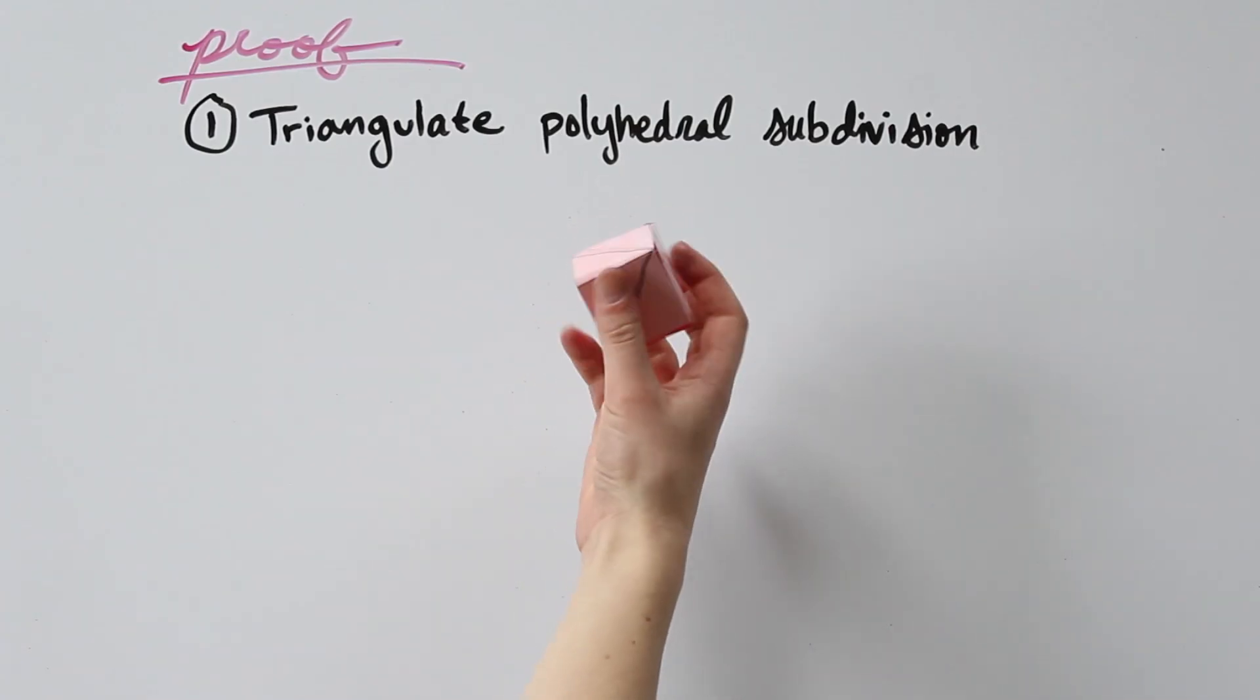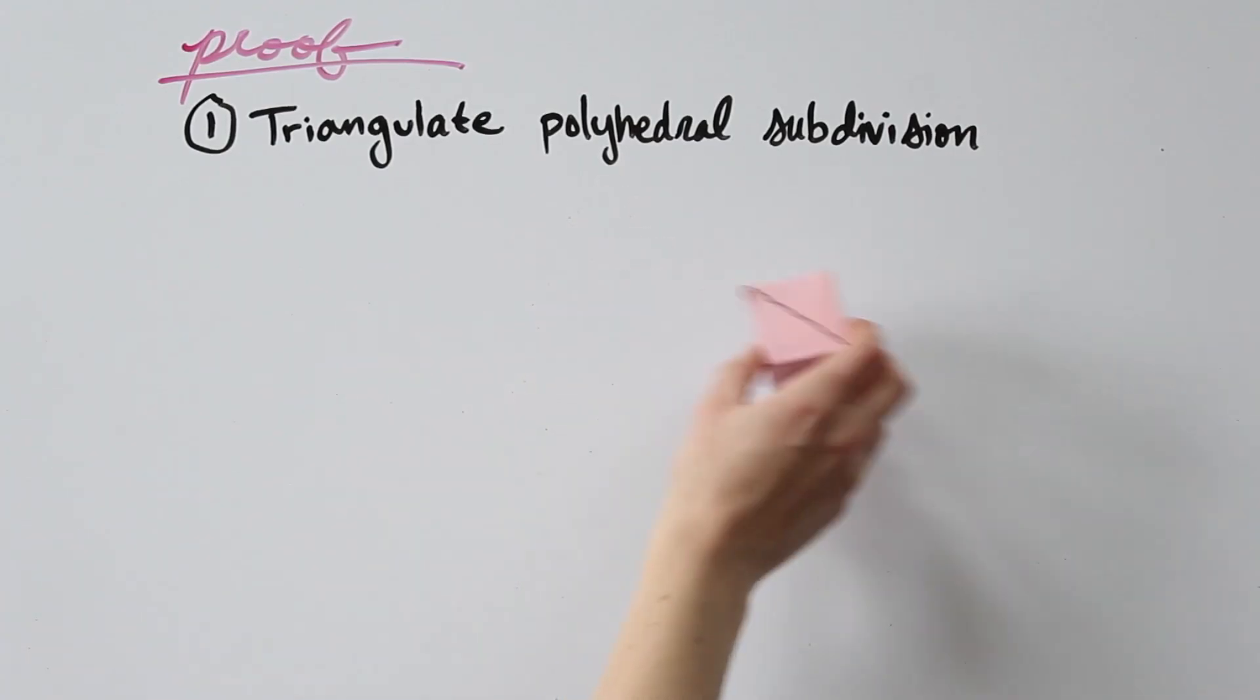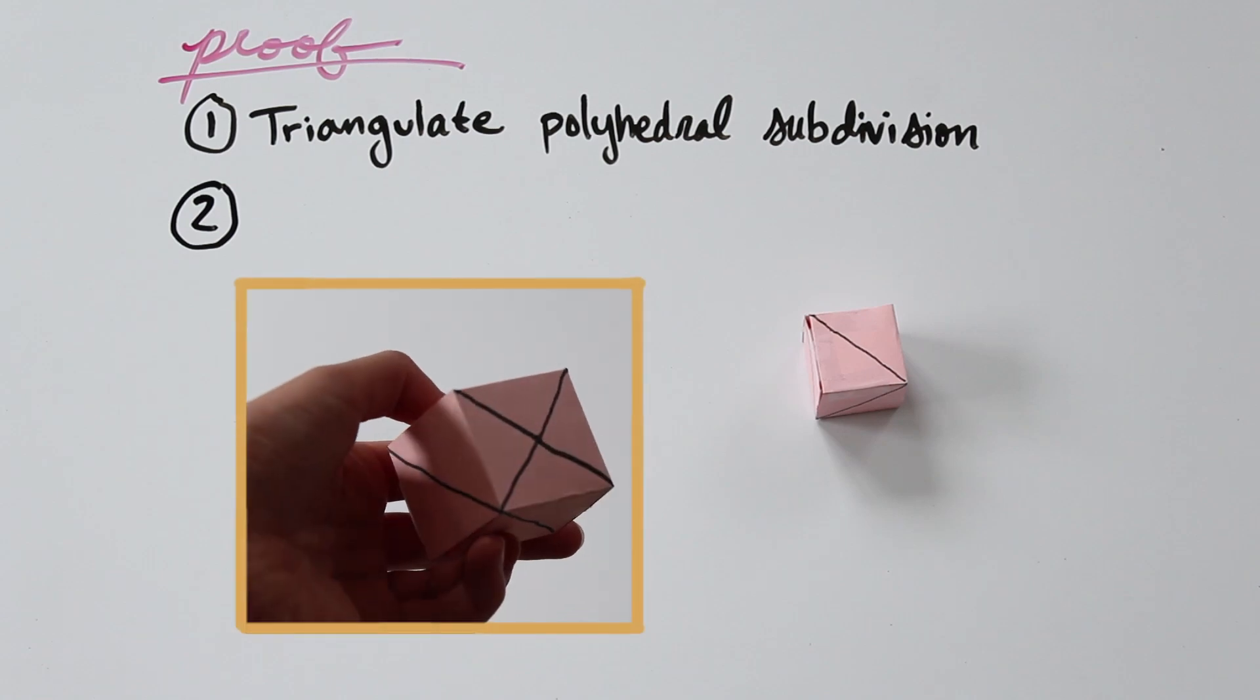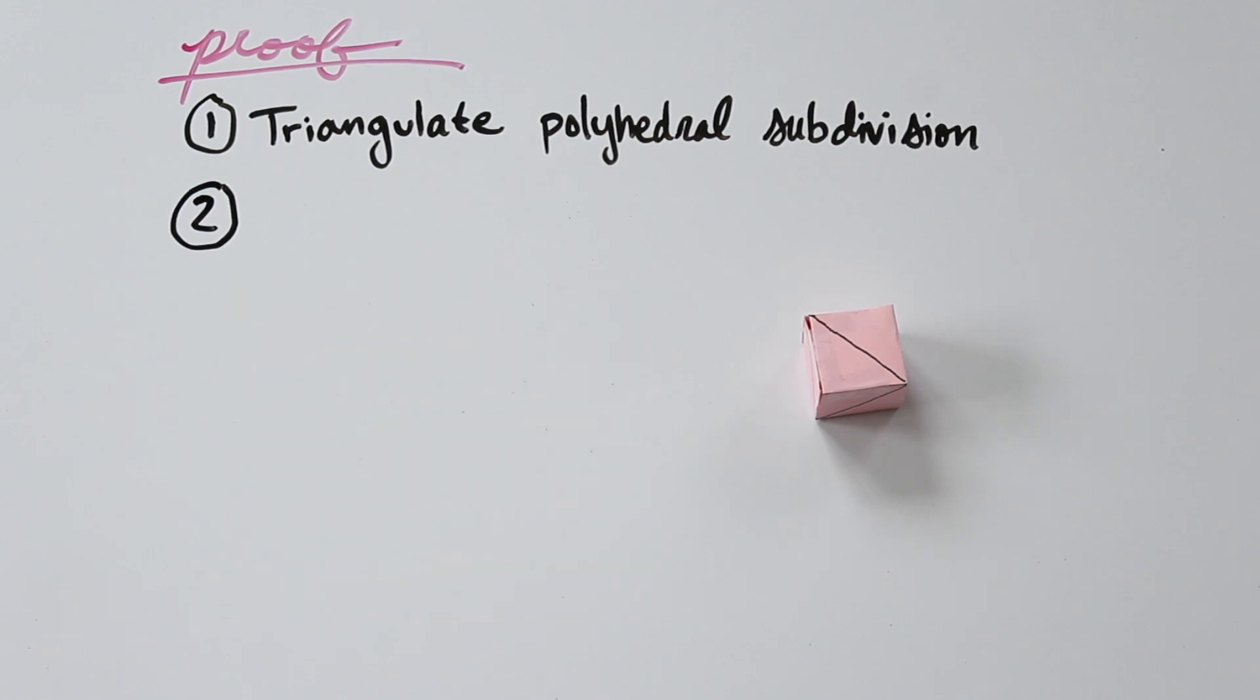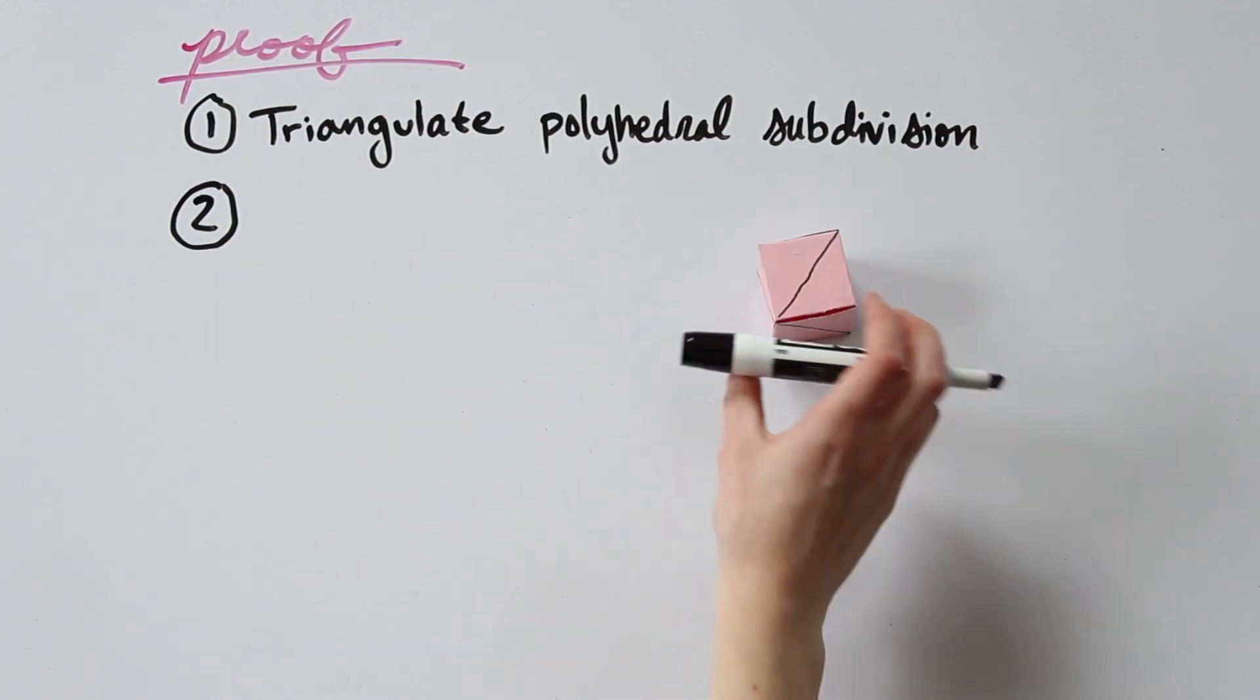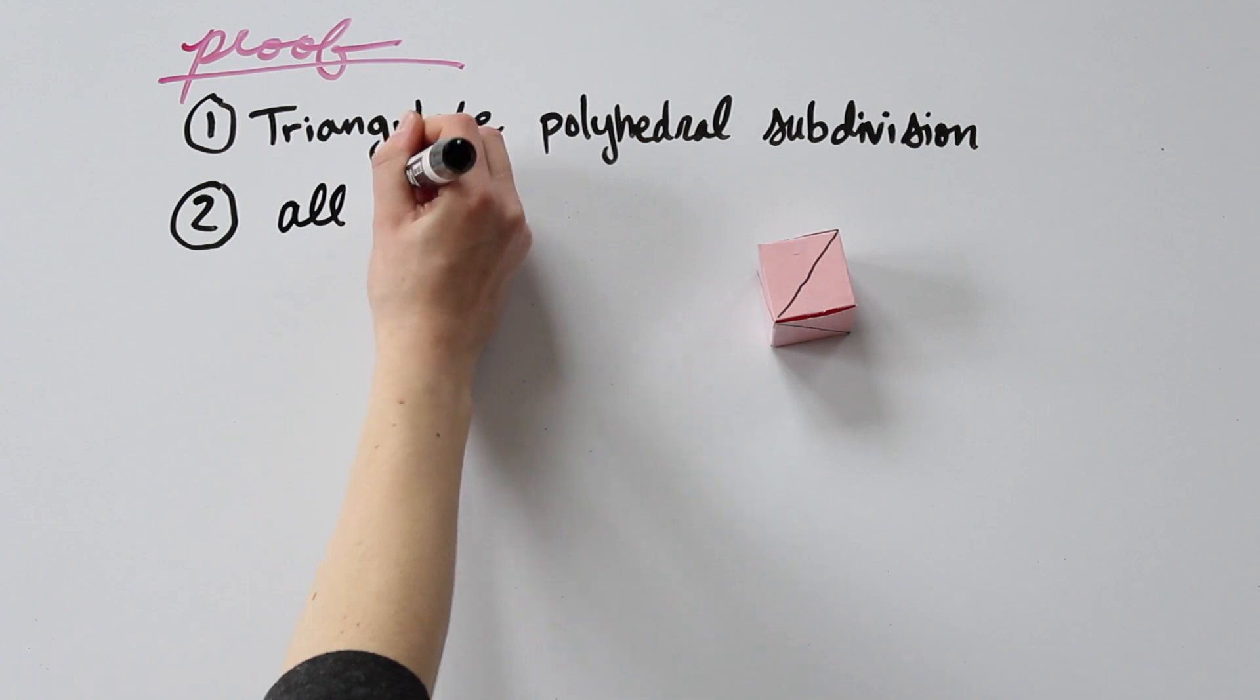Now that we've triangulated our polygon, we have a new subdivision with possibly new vertices. We know that the Euler characteristic of the surface is independent of the subdivision. And if we added any new vertices, they will lie on a face of the original subdivision, so they will have an angle deficiency of 0. So we have a new subdivision with only triangles that really doesn't change anything about the problem.